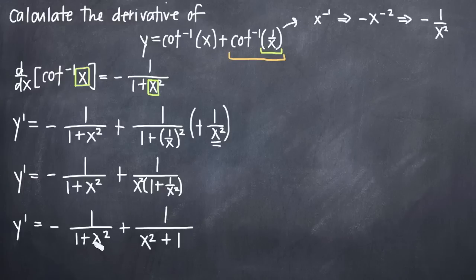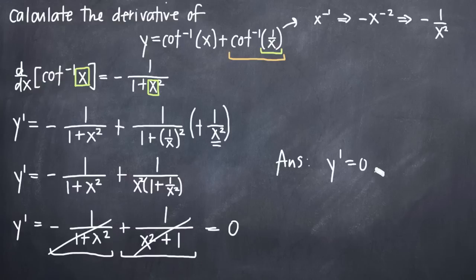So notice now that we have the same two fractions here. We just got the denominators in reverse order. But 1 plus x squared is obviously the same as x squared plus 1. We have a negative term and a positive term, which means that we're actually going to get a result here of 0. So that means that our derivative is y prime is equal to 0 because this negative fraction here cancels with its opposite positive term. These two go away and we're left with 0.